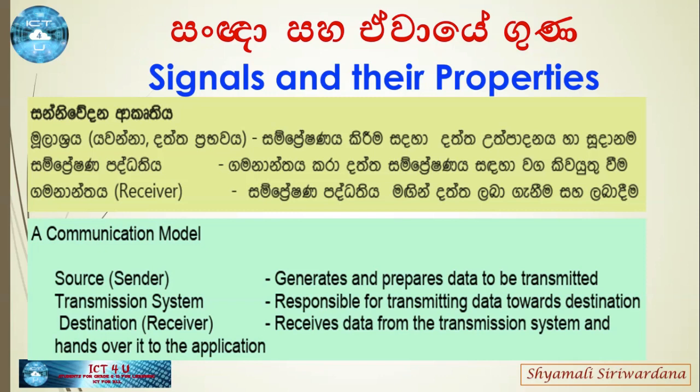The sender generates and prepares data to be transmitted. The transmitter is responsible for transmitting data towards the destination. The receiver receives data from the transmission system and hands it over to the application.